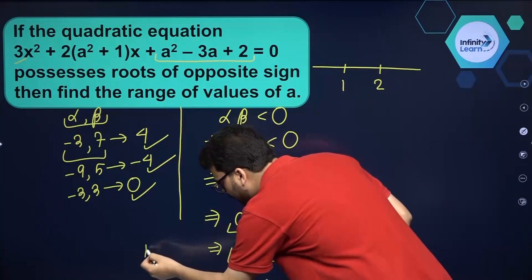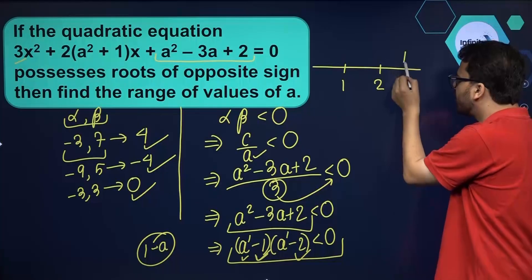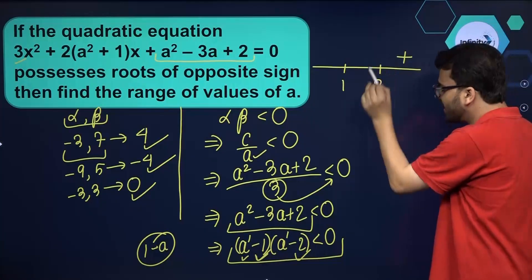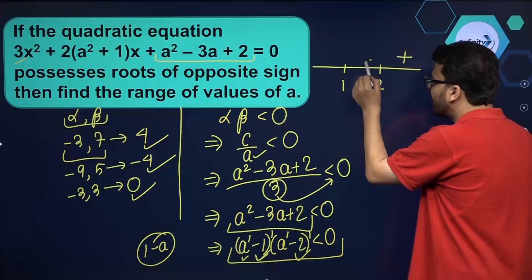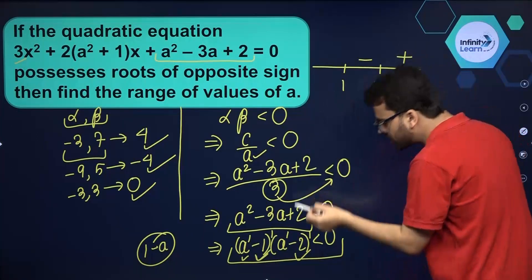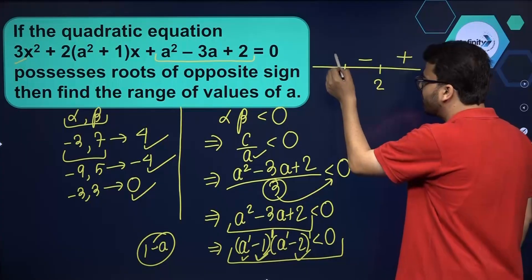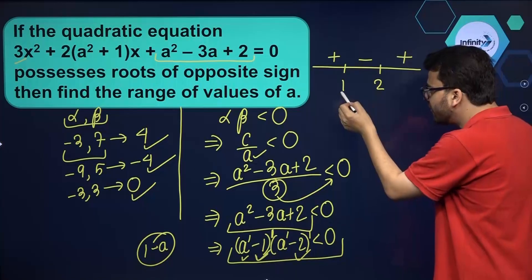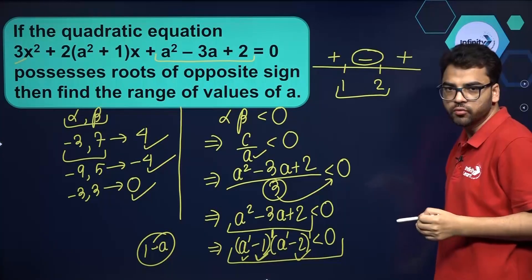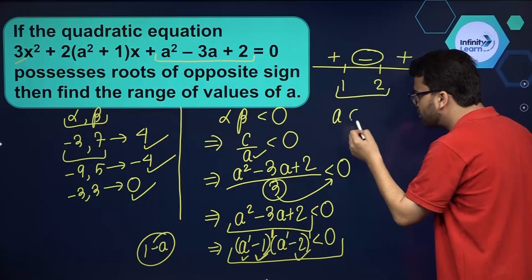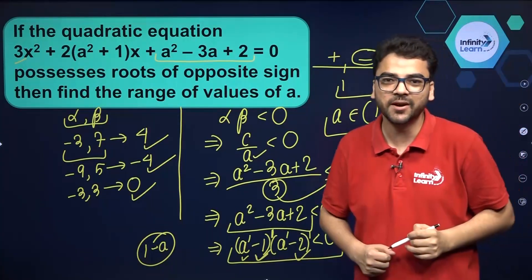Since it is not of the form (1 minus a), you don't have to bother — the very first range will be positive. Then the exponent of the linear factors are odd numbers: 1 and 1, so the sign will change. At 1 also, the exponent of the linear factor is odd, so again it will change. So the range of values where this expression is negative is 1 to 2. Therefore A will belong to the range 1 to 2, and that is the answer. I hope this is clear to every student.